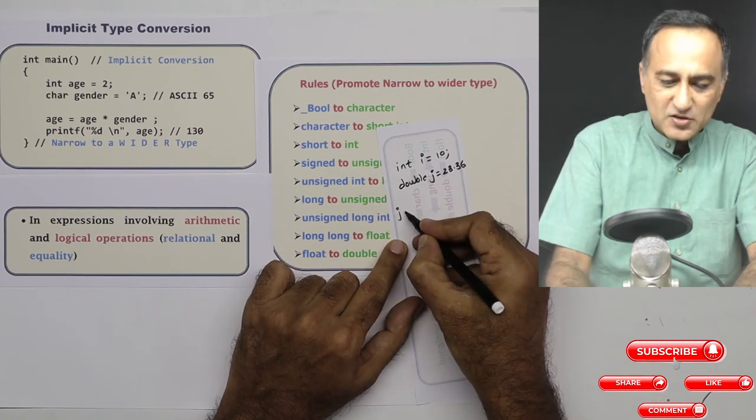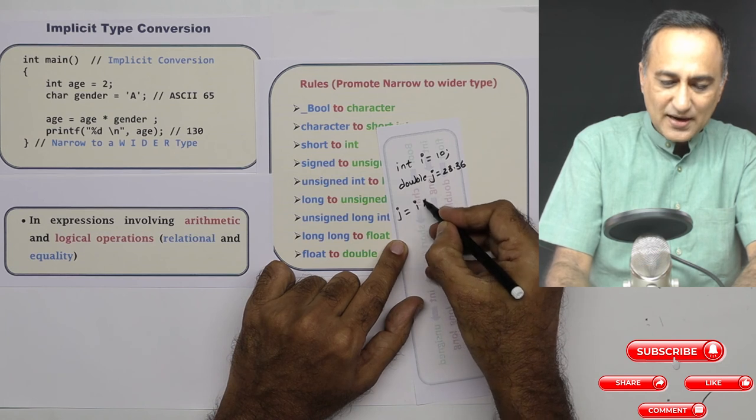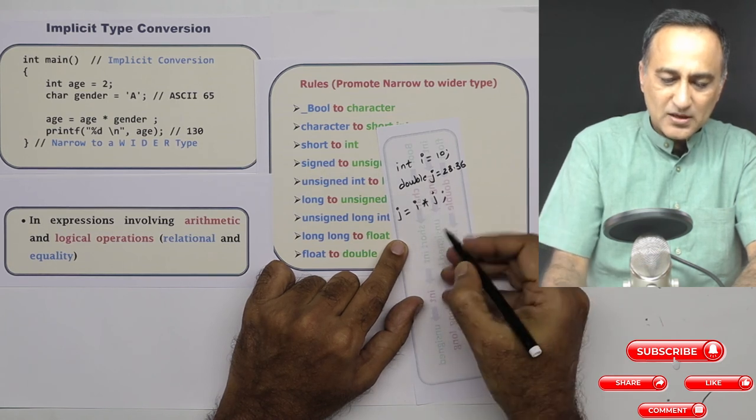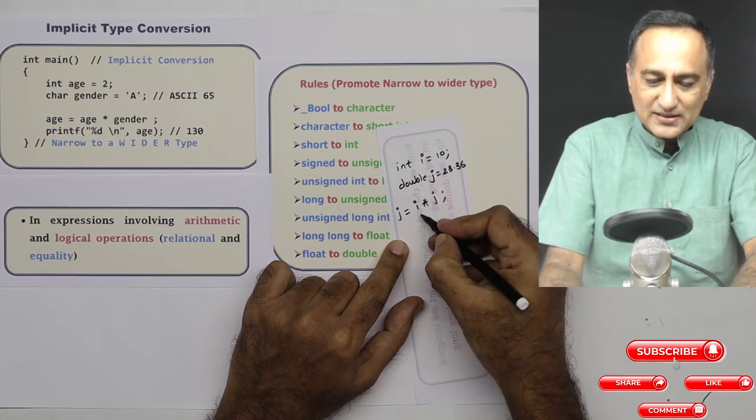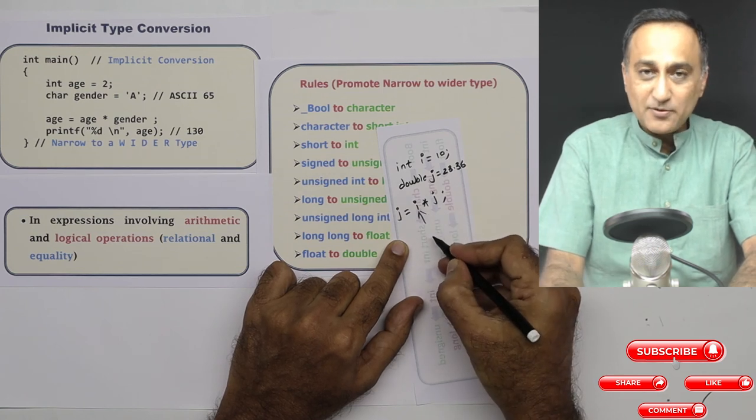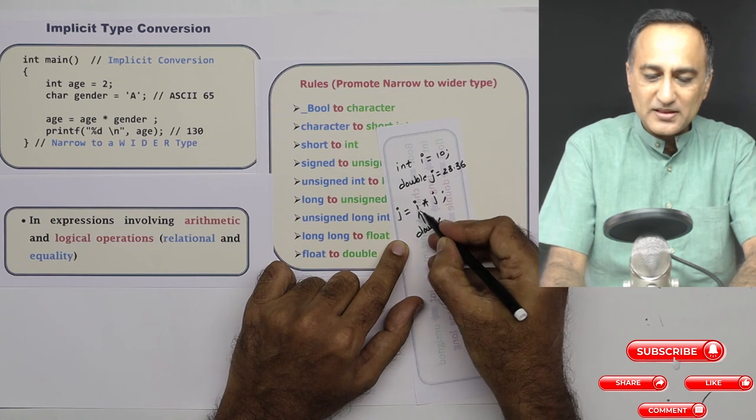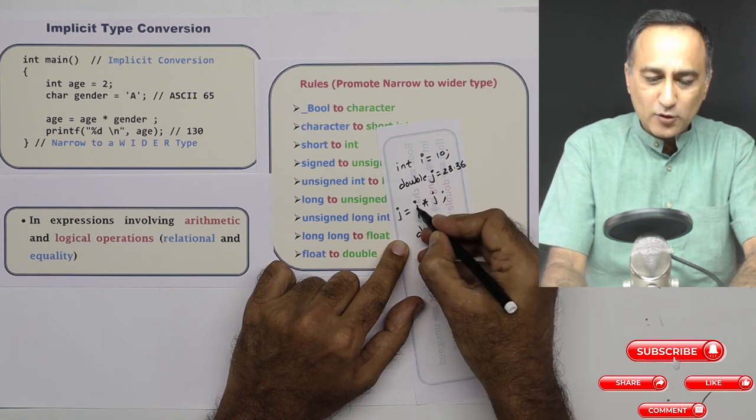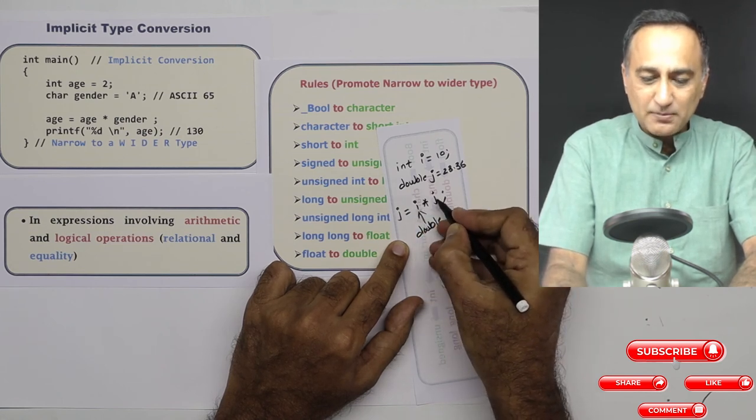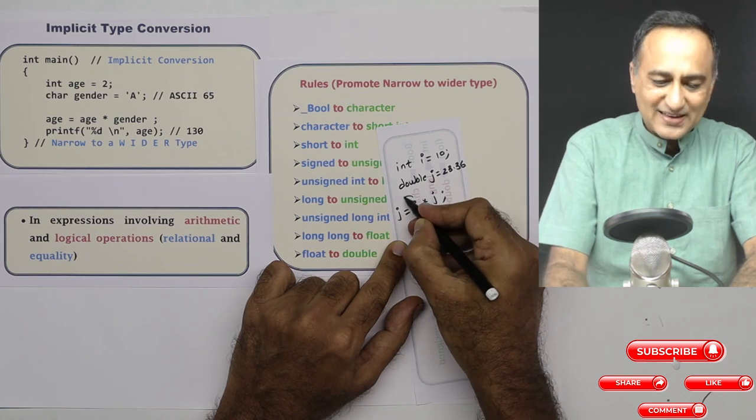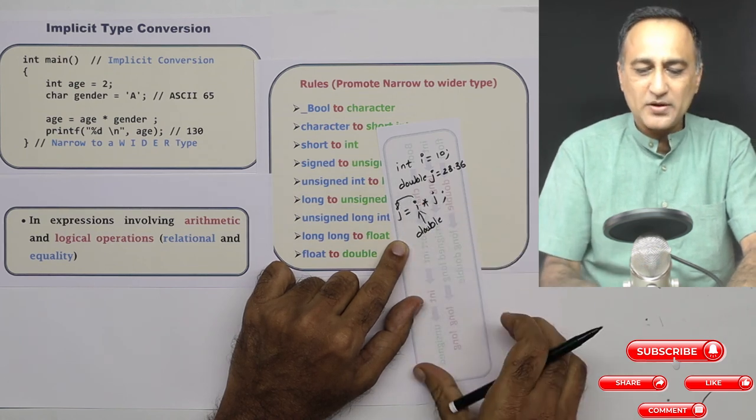Now if I say j is assigned i into j, what is going to happen here is the data type of i is also going to be temporarily promoted to double in this multiplication. So i also will become a double type of variable, the multiplication takes place, and the result of the multiplication will get stored in j.